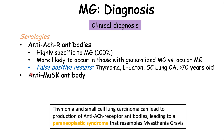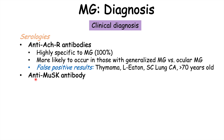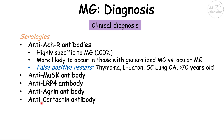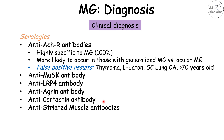Another important antibody is anti-muscle specific kinase (anti-MuSK), which is associated with increased risk of a myasthenic crisis. Other autoantibodies include anti-LRP4 antibody, anti-agrin antibody, anti-cortactin antibody, and anti-striated muscle antibodies. All of these affect muscle function, leading to the signs and symptoms discussed.